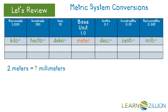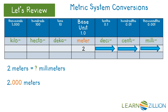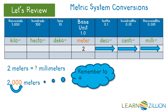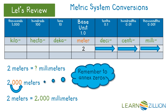In this problem, we are converting meters to millimeters. First, you must determine how many places to move the decimal point. Move the decimal point one place to the right the same number of times it takes to move from the column of the larger unit to the column of the smaller unit. In this problem, we need to move the decimal point three places. So, starting from the decimal point after the two, we move the decimal three places. Remember to annex zeros as you move the decimal point. So, two meters equal 2,000 millimeters.